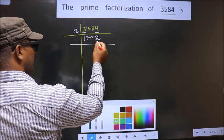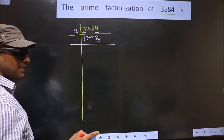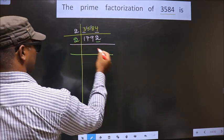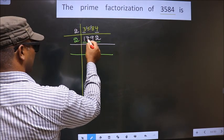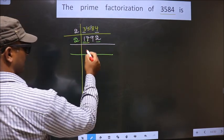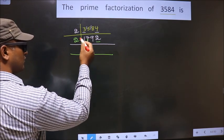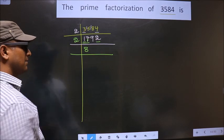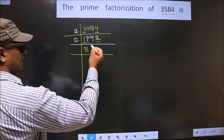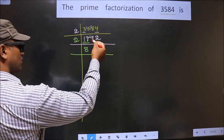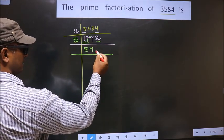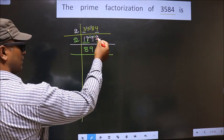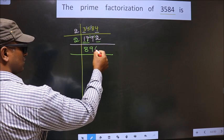Now, for this number, the last digit is 2, which is even, so we take 2 here. First number is 1 — 1 is smaller than 2, so we take 2 numbers, that is 17. A number close to 17 in the 2 table is 2 eights 16. 17 minus 16 is 1, carried forward making it 19. A number close to 19 in the 2 table is 2 nines 18. 19 minus 18 is 1, carried forward making it 12. When do we get 12 in the 2 table? 2 sixes 12.